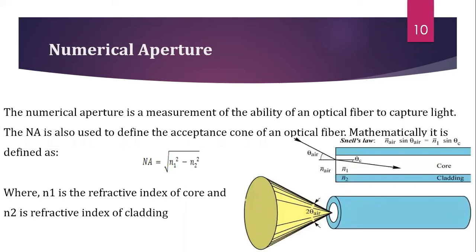The next one is numerical aperture. It is a parameter or figure of merit which represents the light gathering or collecting capability of the fiber. Numerical aperture is a dimensionless number and its value ranges from 0 to 1. The formula for calculating numerical aperture is: NA = n1 × √(2Δ), where n1 is the refractive index of the core and Δ is the index difference. Another formula is: NA = √(n1² − n2²), where n1 is the refractive index of the core and n2 is the refractive index of the cladding.